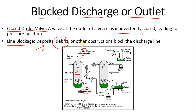A blocked line could also be caused by deposition of debris or solid particles, which can also lead to pressure buildup. Now I want to ask you a question: if this gas line has the valve closed, obviously pressure is going to build up. But if the rich amine liquid control valve is closed, what possibilities could arise? Please let me know in the comments box.